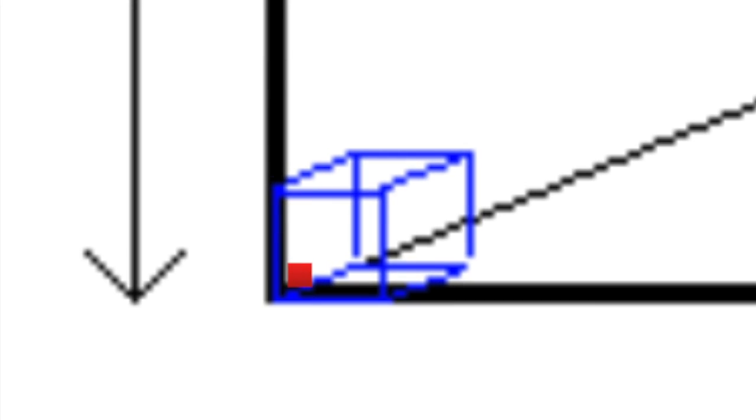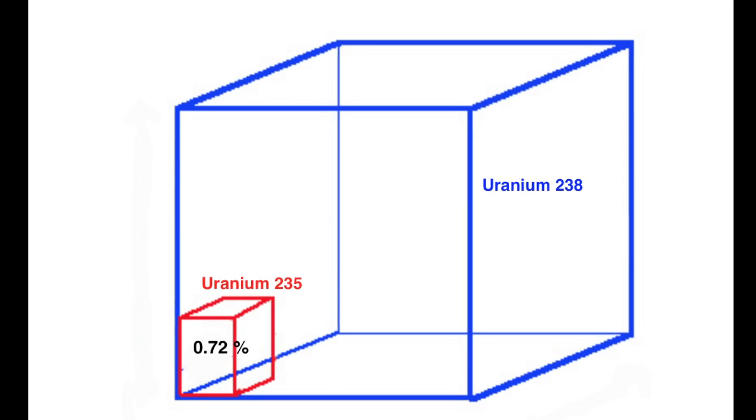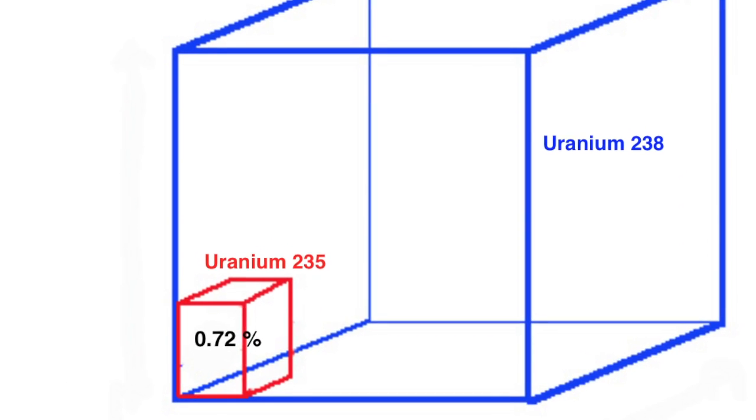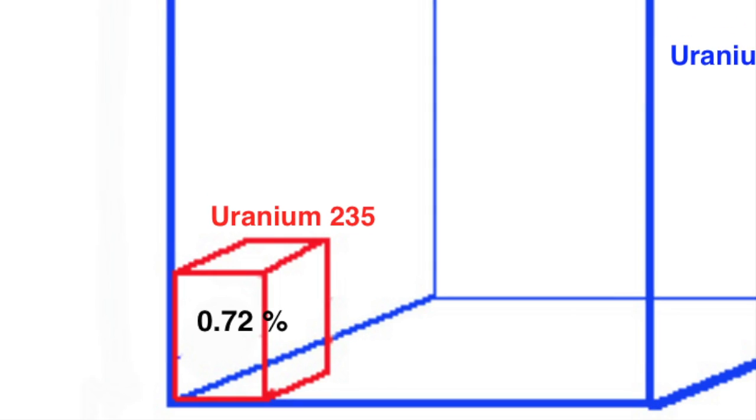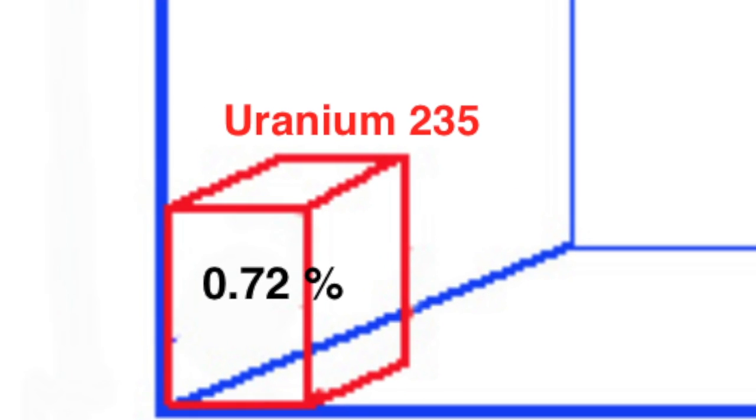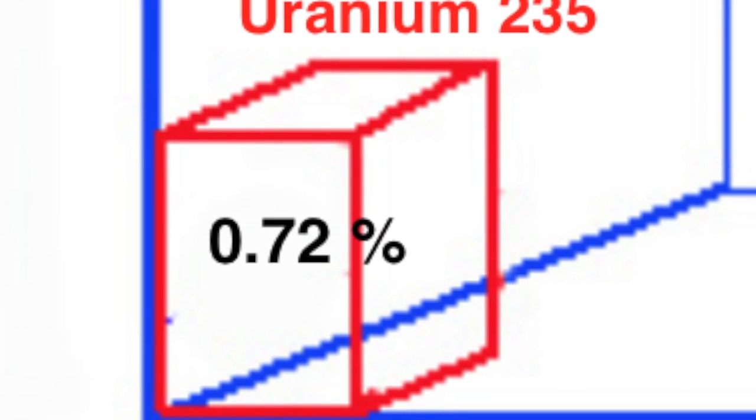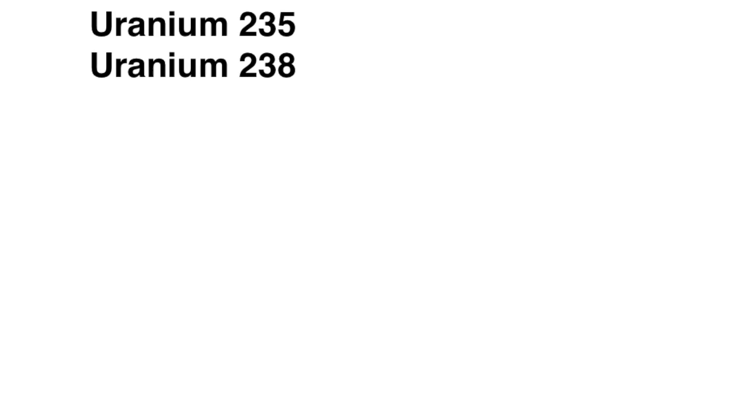But worse than that, of this one kilogram of uranium that you extract from a ton of crushed rock, less than a hundredth of it, less than one percent, is the useful uranium-235. But as you might have guessed, it's worse than that still. The two isotopes in uranium are uranium-235 and 238.